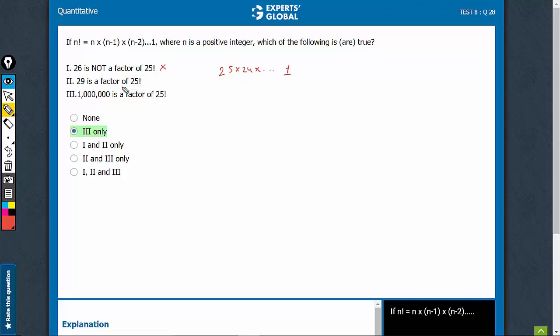29 is a factor of 25. 29 is a prime number greater than 25. So of course this is not going to lie anywhere in this product. Therefore, no, 29 is not a factor of 25. This statement is also incorrect.